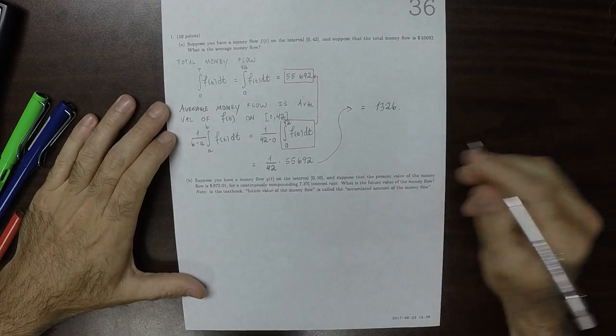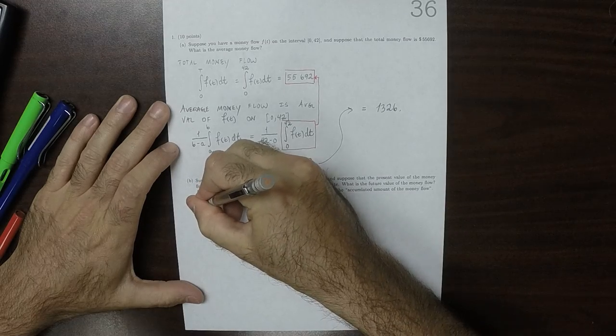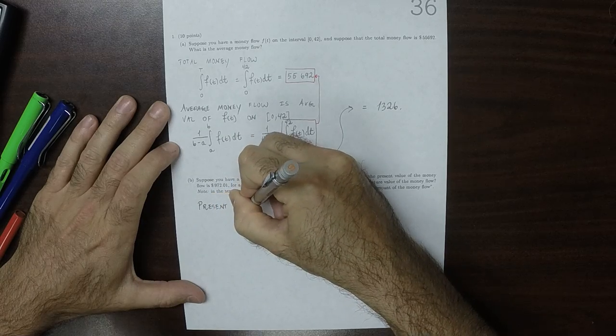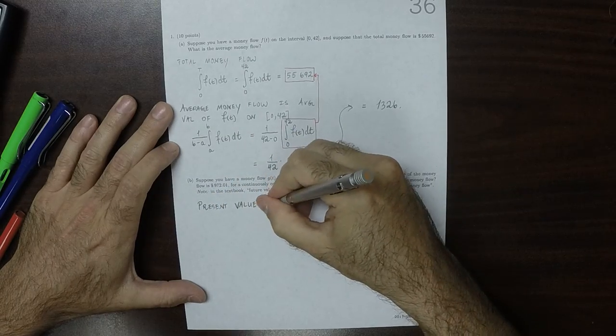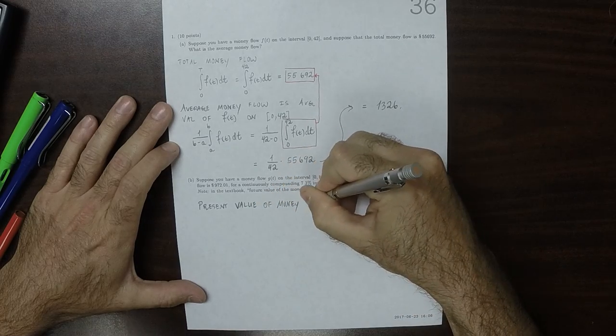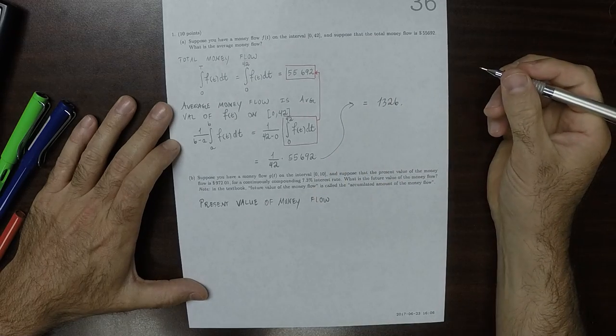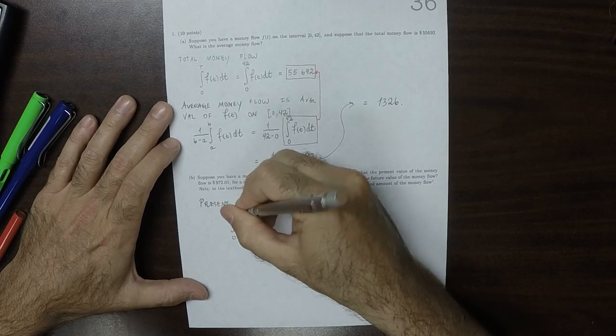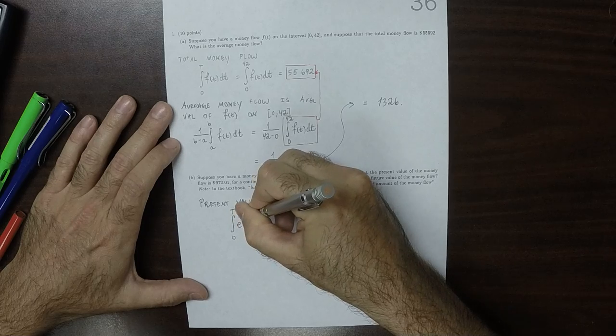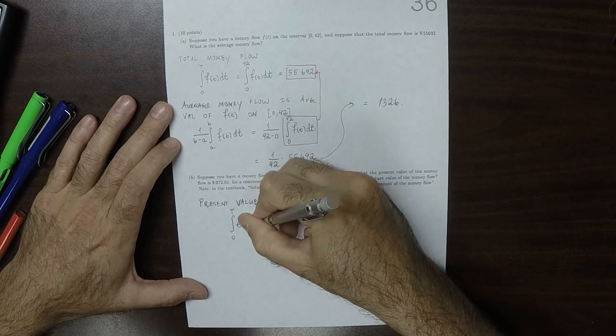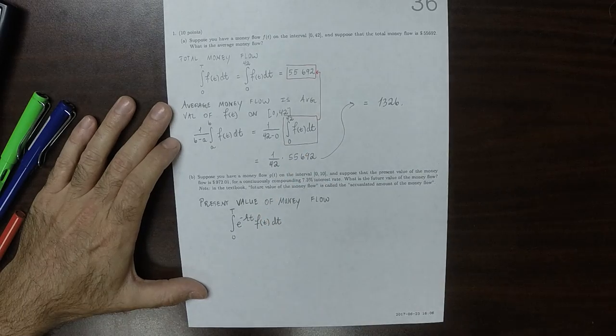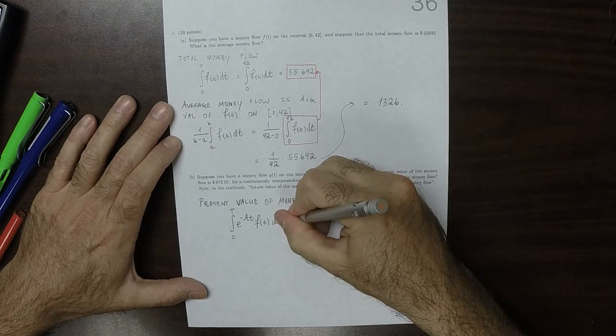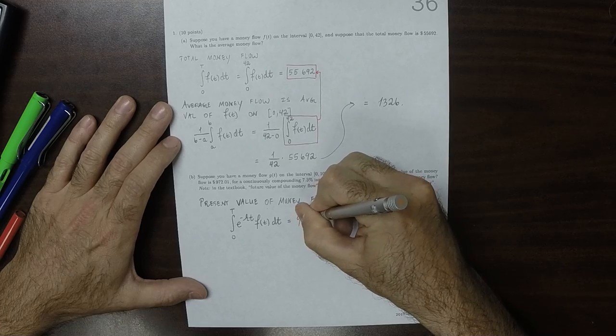So this part b also requires knowing two things. The present value of a money flow is this integral formula. So it's the integral 0 to big T exponential negative R T, f of t d t. So that's the present value of the money flow. And we're given that, in this exercise, that's equal to 972.01.